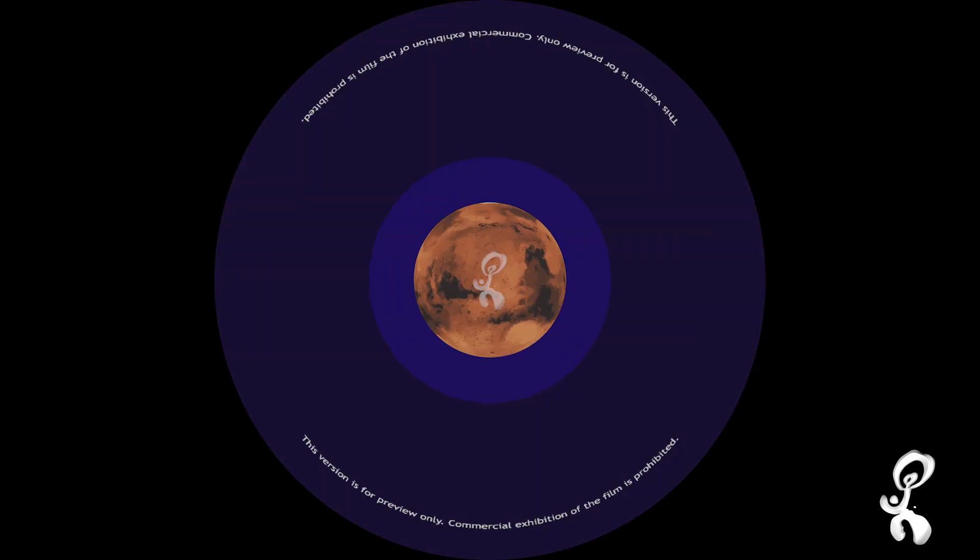Right now, our space scientists are planning to give Mars a visit. Mars has two tiny moons, Phobos and Deimos.